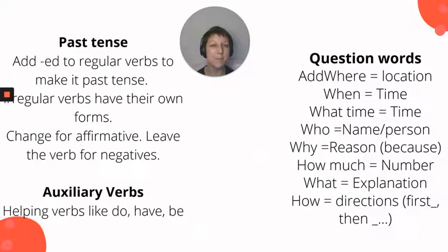We talked about some auxiliary verbs like do, have, and be, and how they help the verb give us more information. We also talked about more question words you might run into and what kinds of answers they're going to give you.